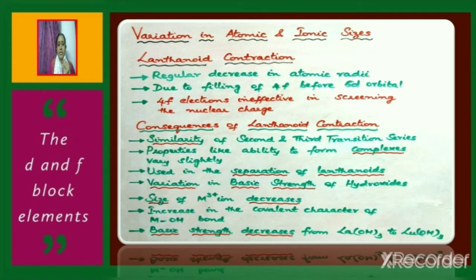One of the consequences of lanthanoid contraction is that the second and the third transition series show similarity in their properties. Properties like the ability to form complexes vary only slightly, and this similarity is also used in the separation of lanthanoids.